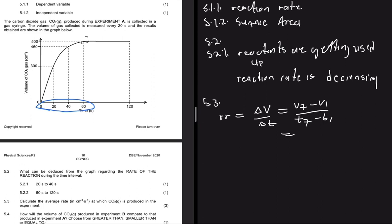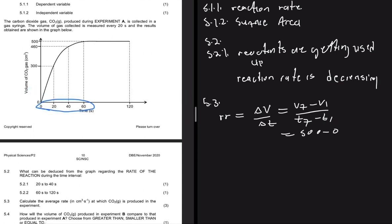The final volume is 500 cm³ and the initial volume is zero. The final time is 60 seconds and the initial time is zero. So we calculate: (500 − 0) / (60 − 0) = 500 / 60 = 8.33 recurring cm³ per second.